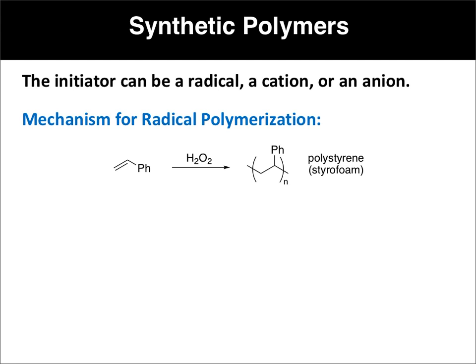To show you how this polymerization takes place and what happens to the alkene, we're going to look briefly at the mechanism. In this case, the initiator is hydrogen peroxide. Hydrogen peroxide — we've seen that before — will just break apart into two OH radicals, and that gets the process started.